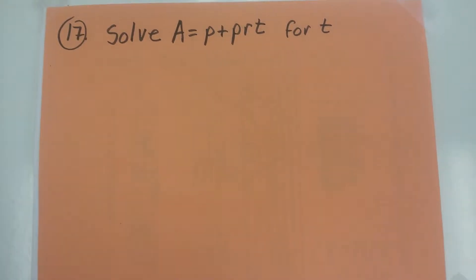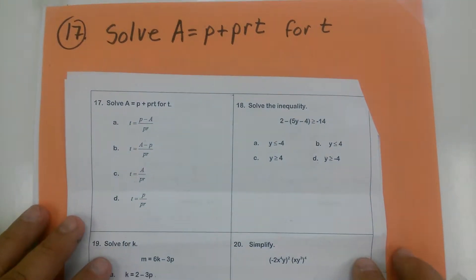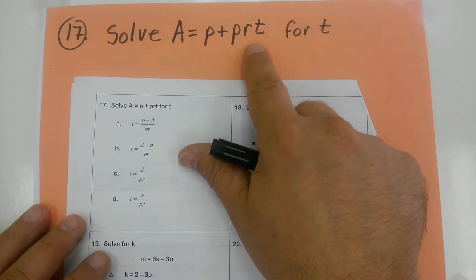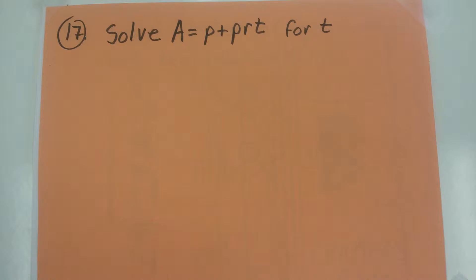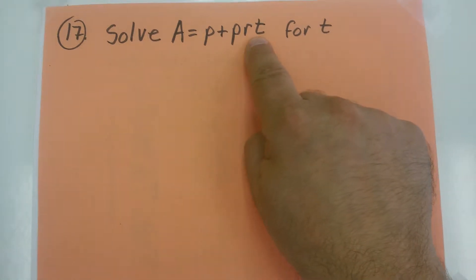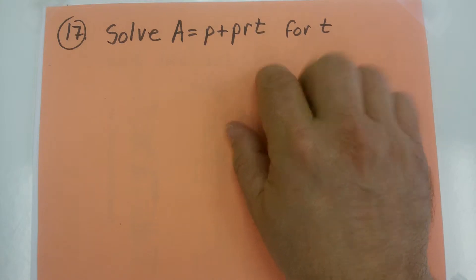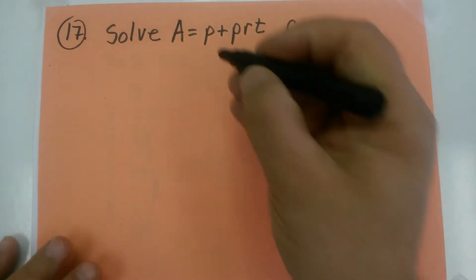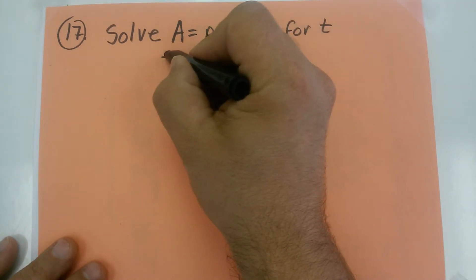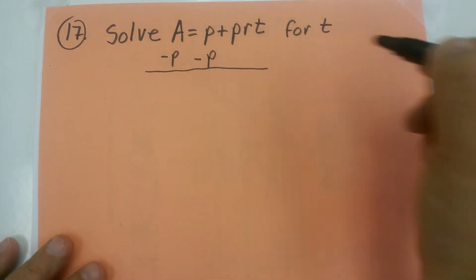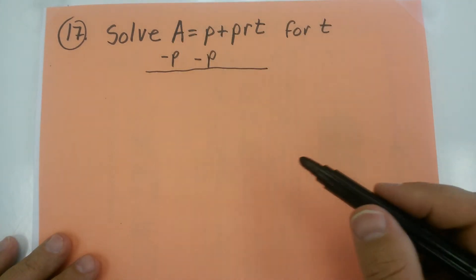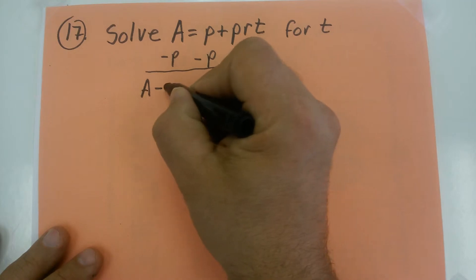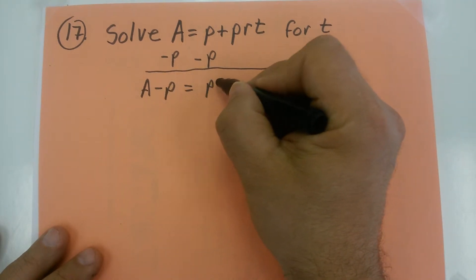Part practice number 17 is a literal equation — an equation that has a bunch of letters in it — and they're asking me to solve this for t. I want to isolate the t variable. I like to cover it up and do the opposite of what's there, so the opposite of p is minus p. I subtract p from both sides of the equation. I don't have any numbers to combine arithmetically, so I just write a minus p, and that equals prt.